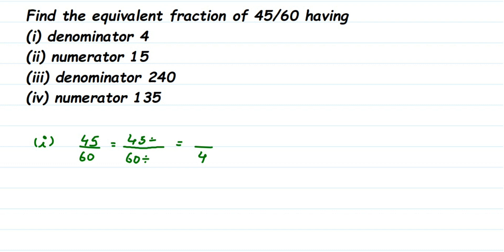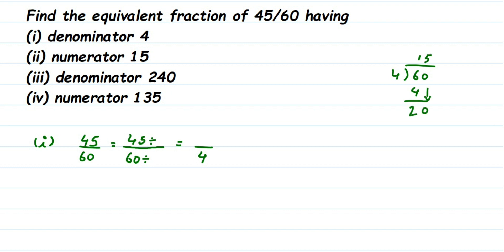If you don't know that number, there is a simple way of finding it out. You divide 60 by 4 and that will give you the number. So, 60 divided by 4: 4 ones are 4, remainder 2, drop the 0 — that gives 20. 4 fives are 20, remainder 0. So we get 15. That means if we divide 60 by 15 we will get 4.